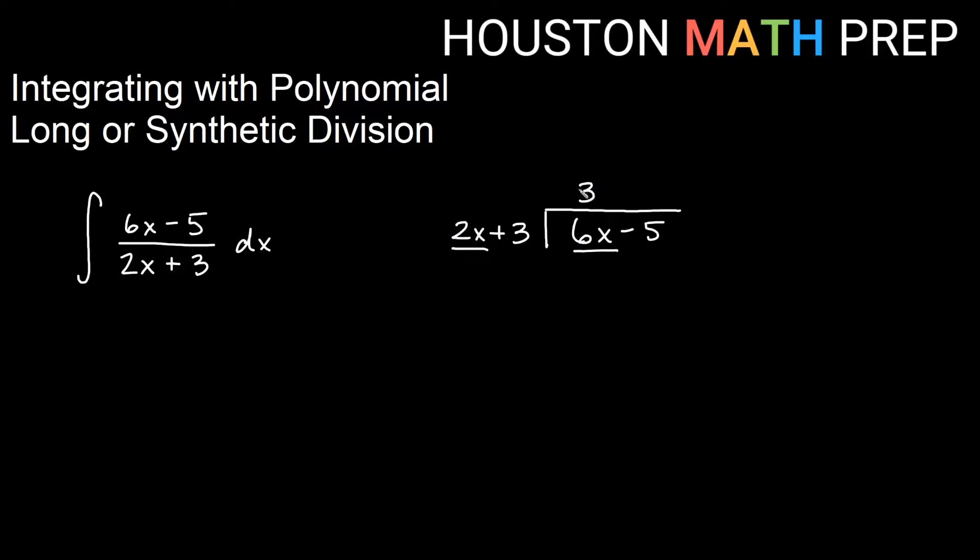So 2x times 3 gives us the 6x. We distribute the 3 outside and write it down below, so 3 times 2x gives us 6x, and 3 times the plus 3 gives us 9. Remember we then subtract when we're doing long division, so we change the signs there. The 6x term goes away, we get negative 14. At this step you would then look at 2x going into what's down below, but what we have is not large enough, so we say minus 14 over 2x plus 3. Negative 14 was our remainder for this problem.